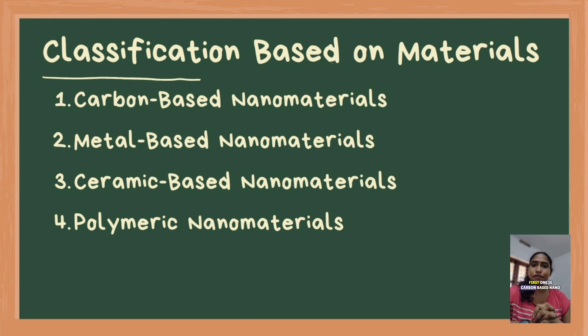First one is carbon-based nanomaterials. This includes fullerene, carbon nanotubes, and graphene, which are known for their exceptional mechanical strength, electrical conductivity, and chemical stability.